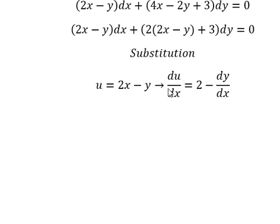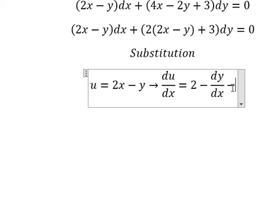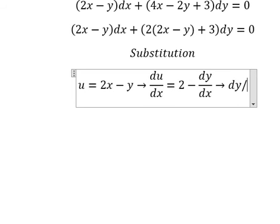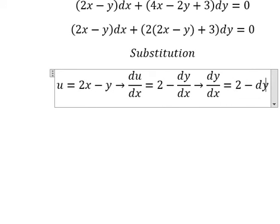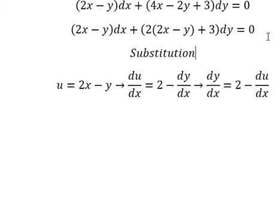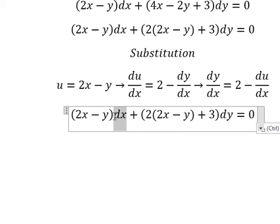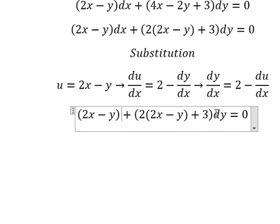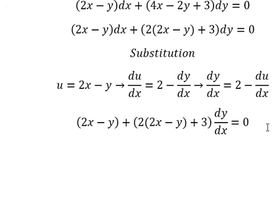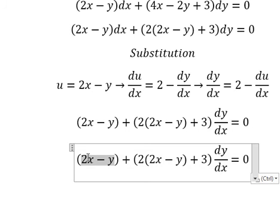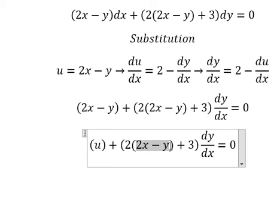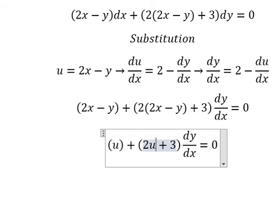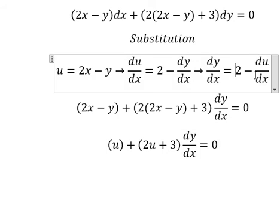So we put this one to the left and this one to the right. Next, we divide both sides by dx. So this one will change for u, this one will change for u, and this one will change by this one.